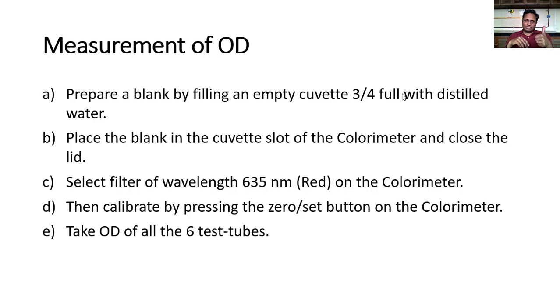Take cuvette with distilled water, place in cuvette slot, close the lid. Otherwise, the light from outside will interfere with the optical density or zeroing of the colorimeter. Select filter of wavelength 635 nanometer on the colorimeter and then calibrate by pressing the zero or set button on the colorimeter. This will set your colorimeter to zero absorbance and 100% transmittance. After that, take optical densities of all six test tubes.